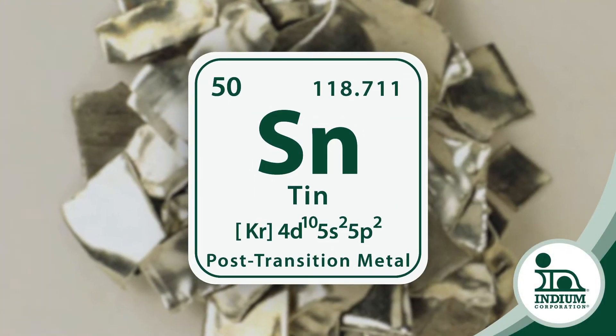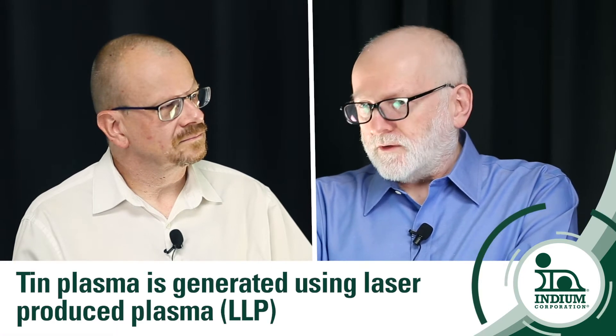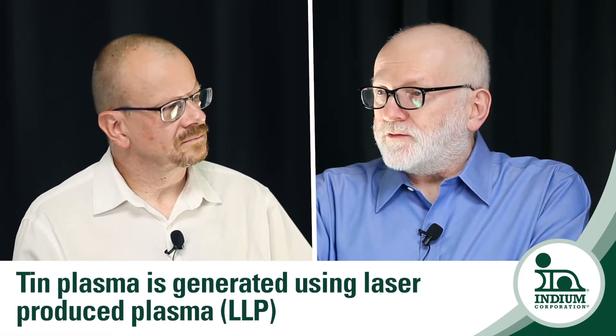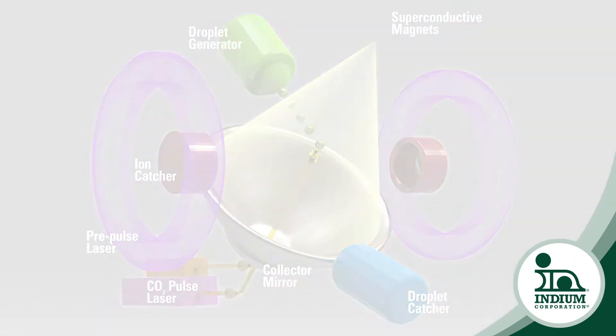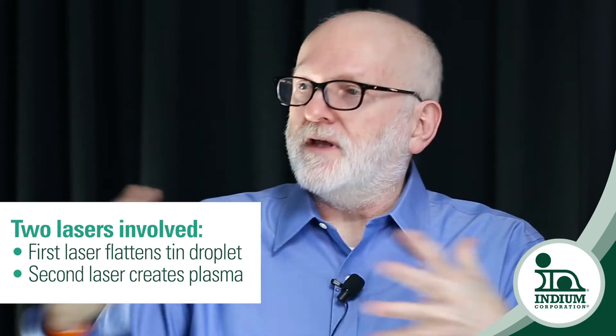This is all based on tin — the chemical element tin. A tin plasma is the source of the light used in this lithography application. The tin plasma is generated using LPP, laser produced plasma. This happens in a chamber in which tiny molten tin droplets are being injected at a very rapid clip. They are hit by lasers that first flatten the droplets into pancake-like shapes, and a second laser beam that then creates the actual tin plasma.